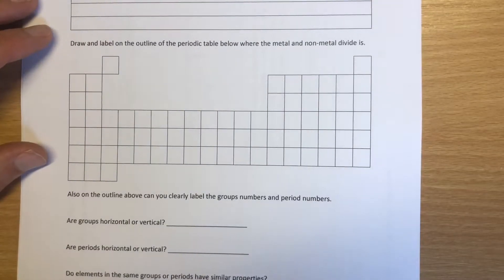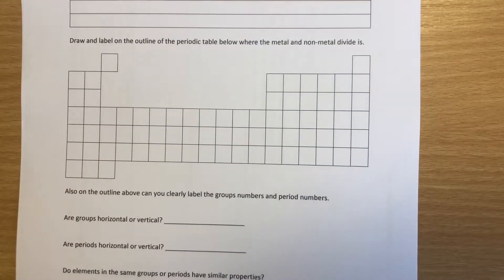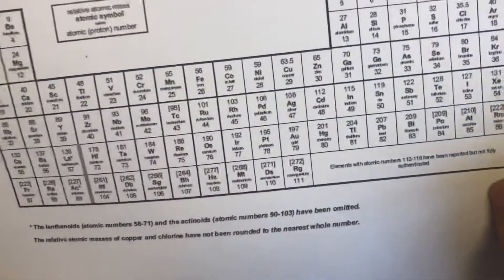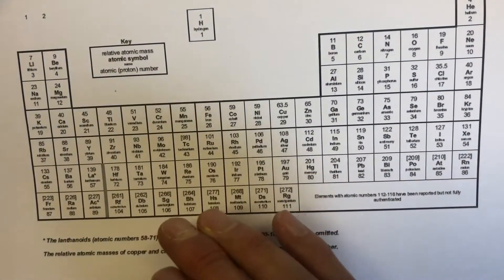So we're going to talk here about introducing the periodic table. The periodic table is a list of all the elements. Everything in the universe is made up of these hundred or so elements. I've got a periodic table here.